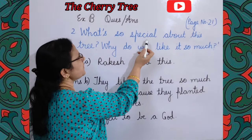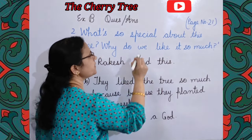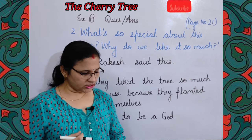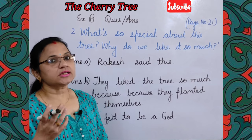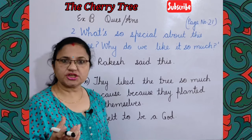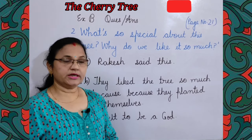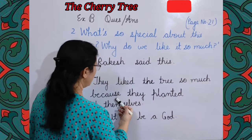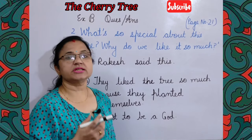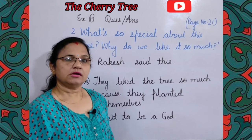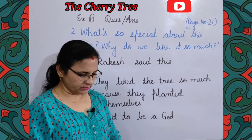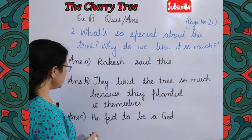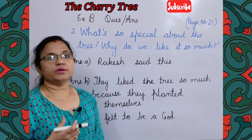Next quotation: 'What's so special about this tree? Why do we like it so much?' Question one: Who said this? Answer: Rakesh said this. Question B: Why did they like the tree so much? Answer: They liked the tree so much because they planted it themselves. Question C: How did the speaker feel after watching the tree grow? Answer: He felt like a god.